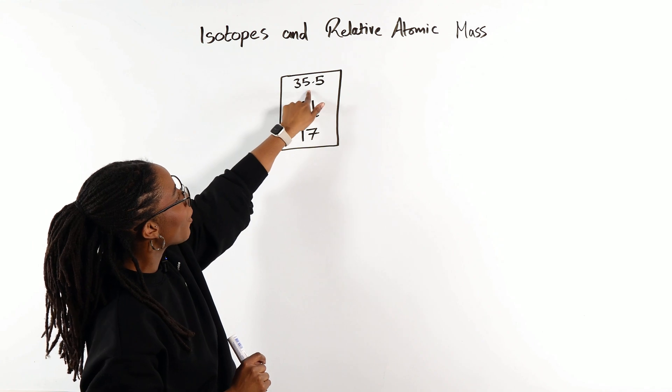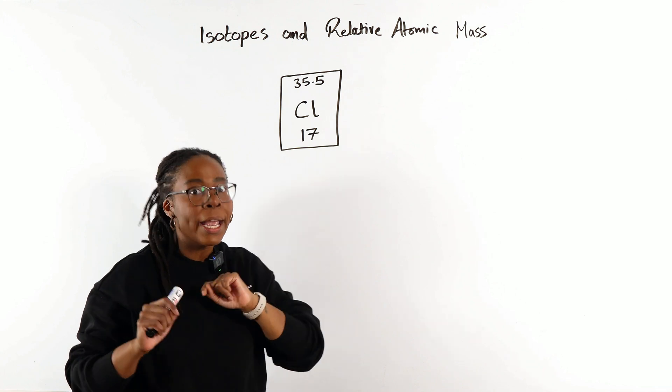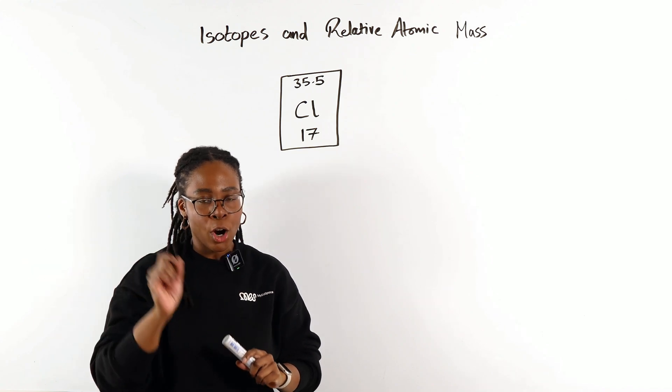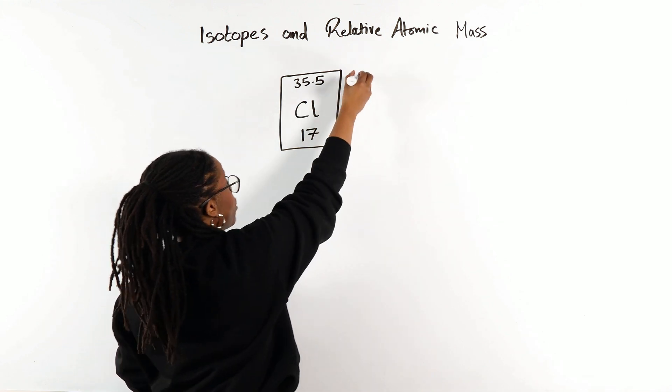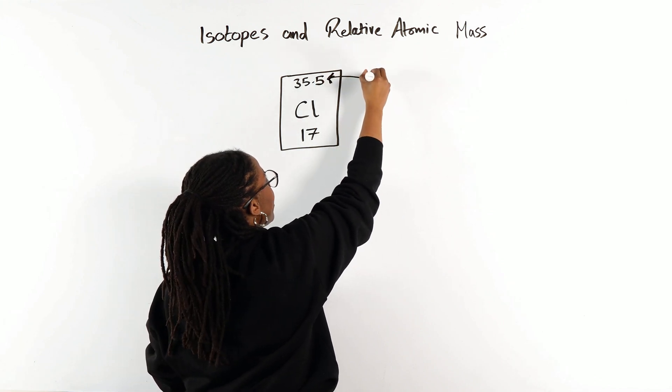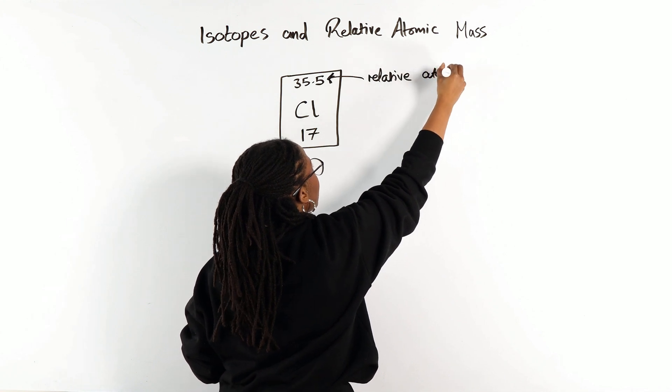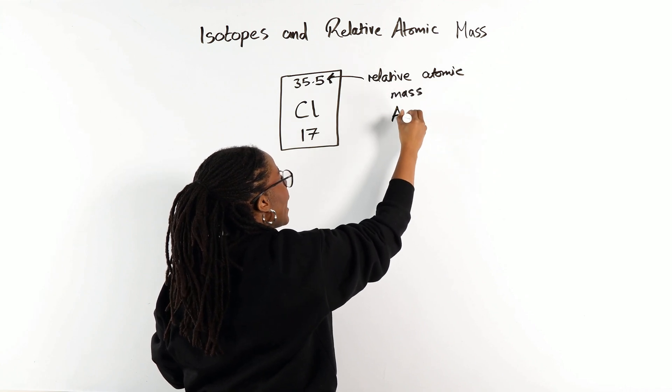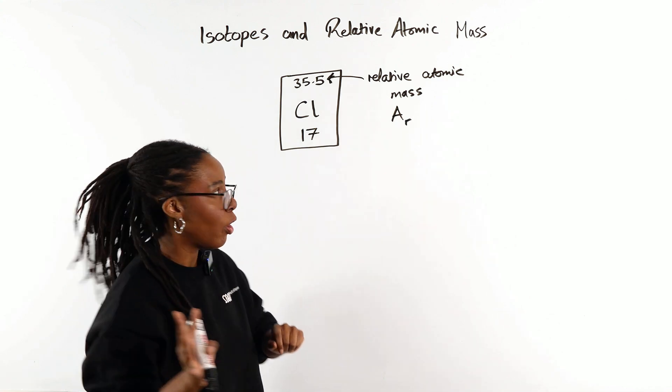We'd see that the number up at the top of the chlorine periodic table tile is a decimal, whereas all of your other ones, apart from copper, are whole numbers. That's because this number up here at the top of your tile is not the mass number, but that is the relative atomic mass, which we give the symbol Ar (with a subscript R), not to be confused with argon.